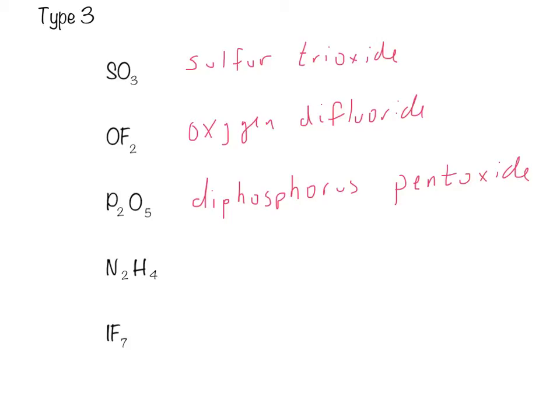And then we have N2H4. We've got two nitrogens. So, this is a dinitrogen. And then we've got four hydrogens. Now, this is the first time we've seen hydrogen as if it were an anion. So, we take this and we add the IDE. So, this is hydride. There are four of them. So, this is tetrahydride. Dinitrogen tetrahydride.